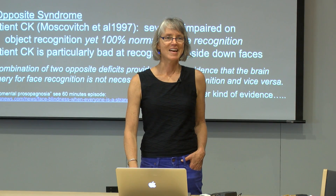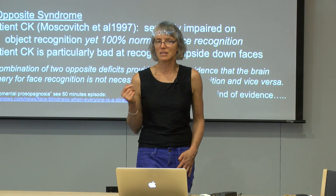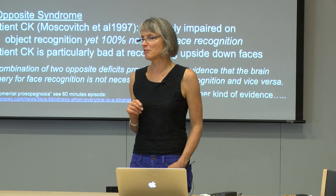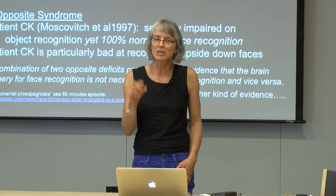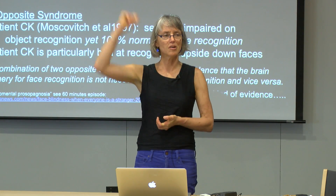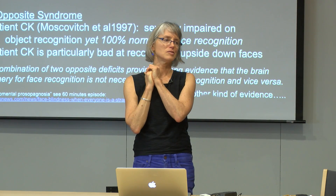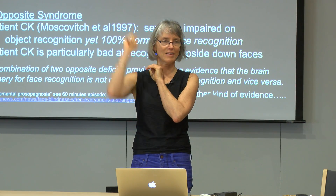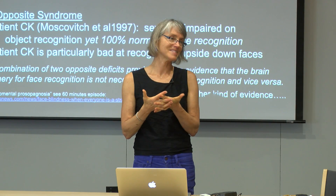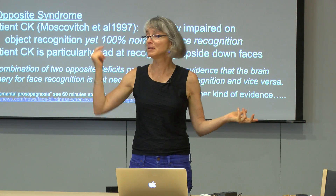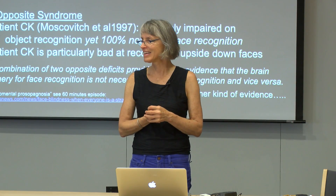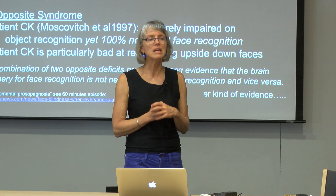There's another kind of evidence. The problem with patient studies is they're very powerful when you get them, but generally when people have brain damage, it doesn't neatly respect the boundaries of whatever region you want to study. You can't just say, show me all the people with damage all and only in the fusiform face area and nowhere else — that is the one case in the entire literature. And you never have the before data; maybe this person couldn't recognize faces before the lesion. So we really would like more data. We need another method.